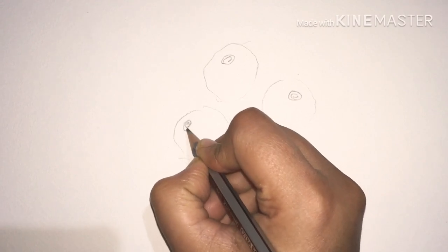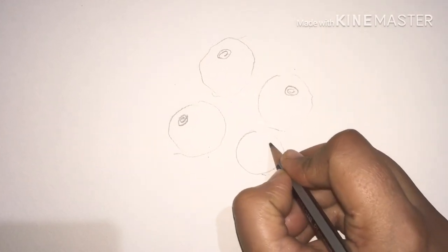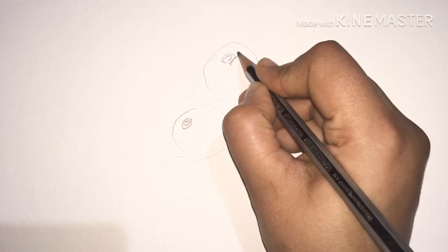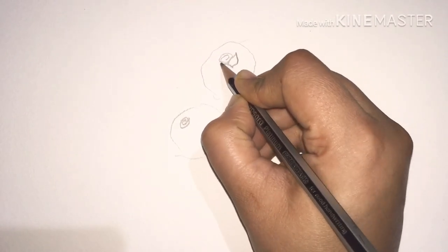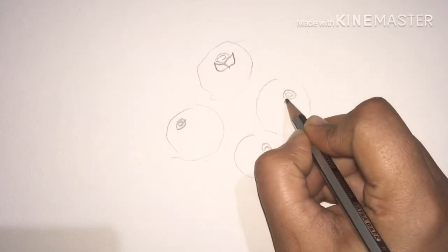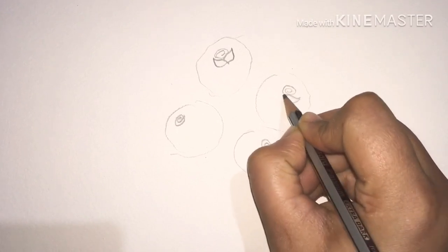We'll draw spirals on each of the roses. It will be like this, and we'll draw some leaf-like structures like this.